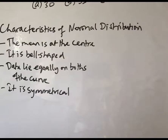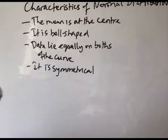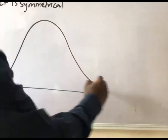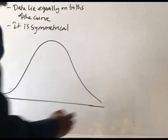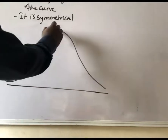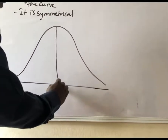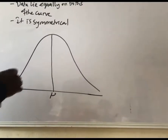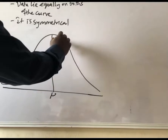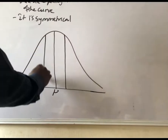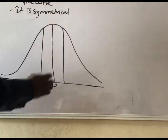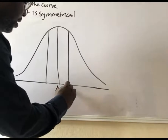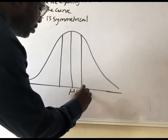This can be illustrated by drawing a bell-shaped normal curve. At the center, we have the mean — this is the symbol for mean. On either side, the first deviation from the mean is one deviation from the mean. We have mean minus one standard deviation on the left side.